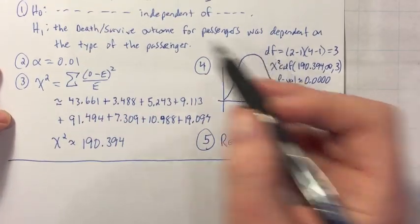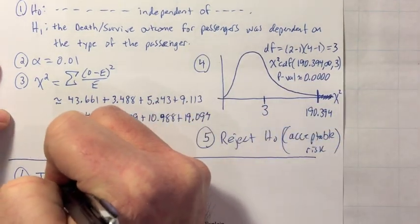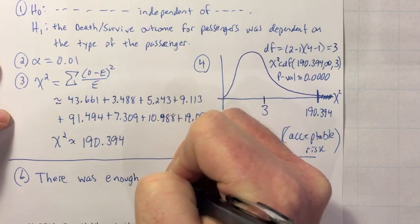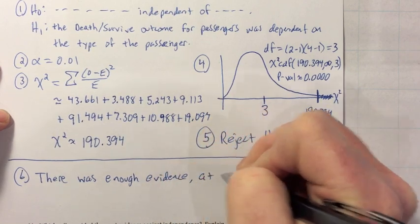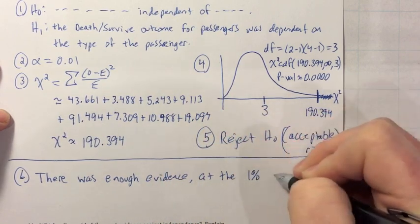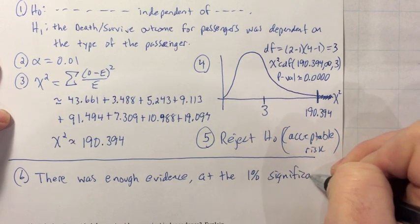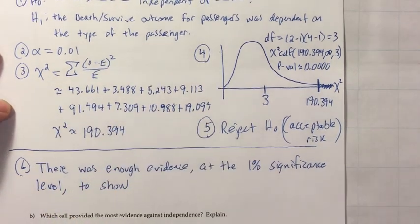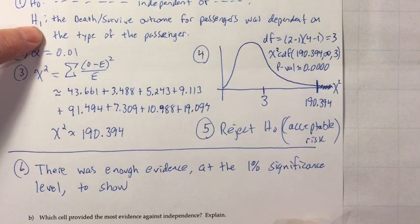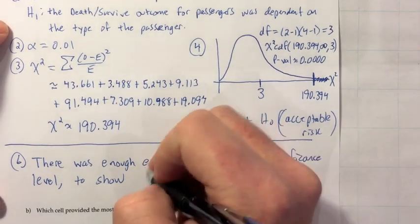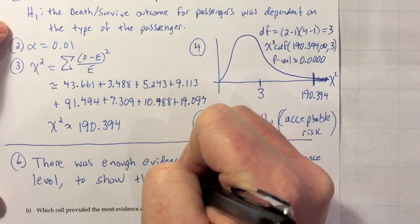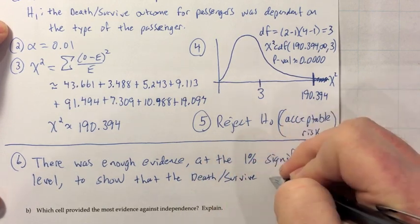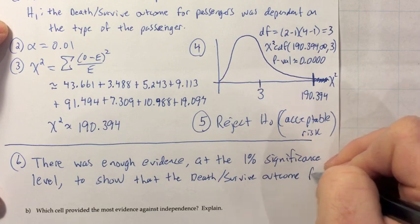Last step — put it into words. We were able to reject H0, so there is enough evidence at the 1% significance level to show H1: that the death/survive outcome for passengers was dependent on the type of the passenger.